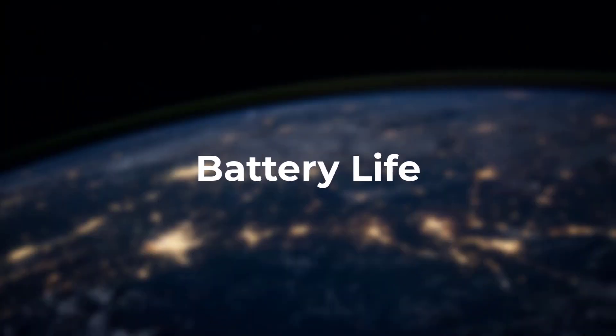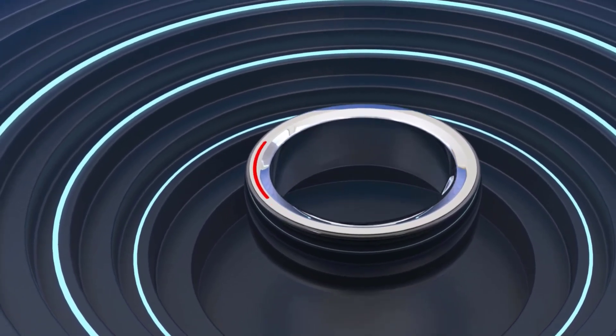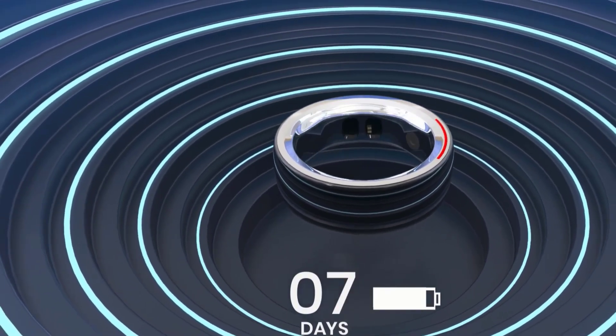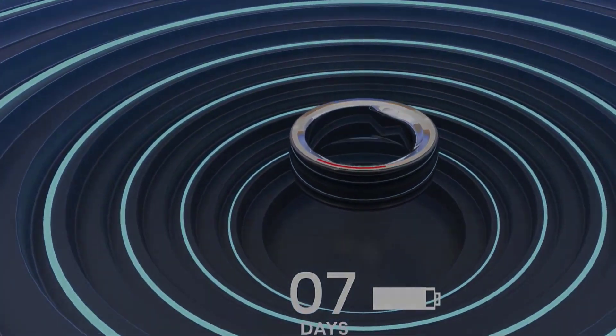Battery life. So the ROGBID Smart Ring delivers here as well, with up to seven days of runtime on a single 60-minute rapid charge. Standby time can even be extended up to 30 days.